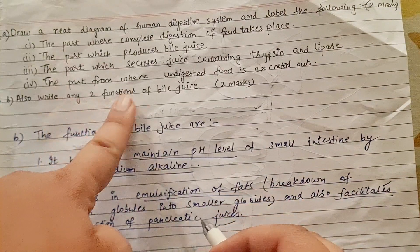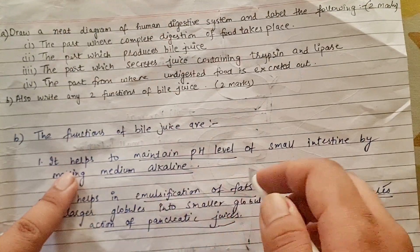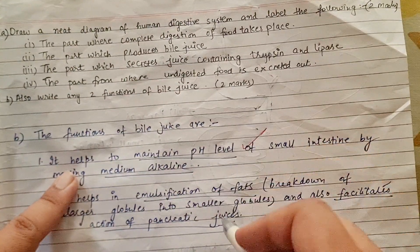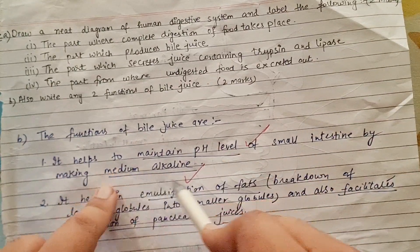I'm going to read the question: write any two functions of bile juice. The student has written here it helps to maintain the pH level of small intestine, very good, and makes the medium alkaline, which is important. The student has underlined it.